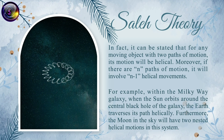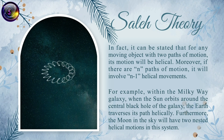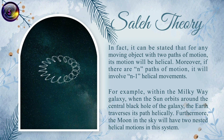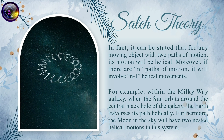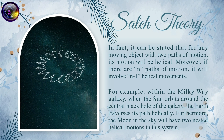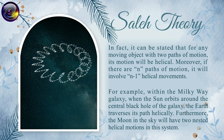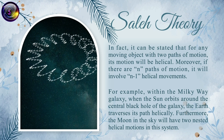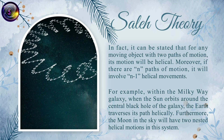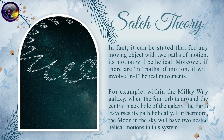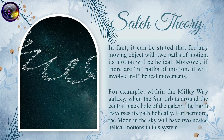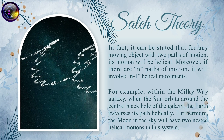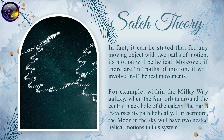Moreover, if there are n paths of motion, it will involve n-1 helical movements. For example, within the Milky Way galaxy, when the Sun orbits around the central black hole of the galaxy, the Earth traverses its paths helically. Furthermore, the Moon will have two nested helical motions in this system.